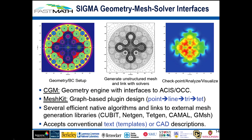MeshKit is actually a graph-based design, so you could replace any of the line generators or triangular mesh generators with external packages — it gives the ability to do plug-and-play of different meshing algorithms. There are several interfaces through MeshKit for mesh generation: the interface to Cubit from Sandia, NetGen, TetGen, and Gmesh, which is GPL.